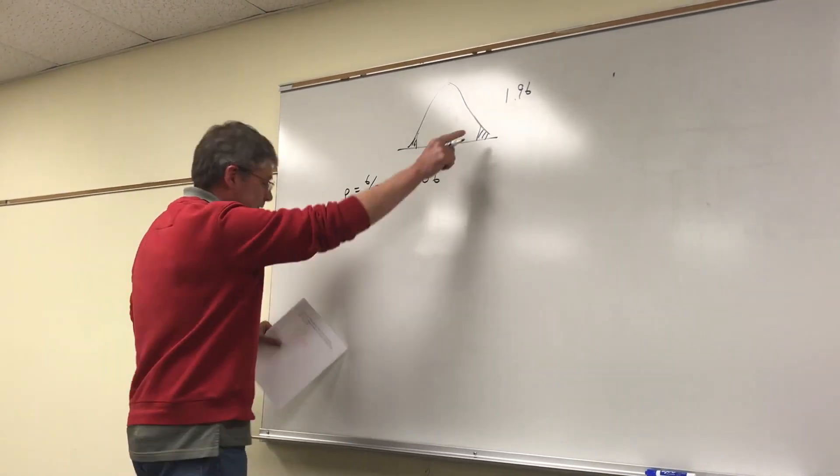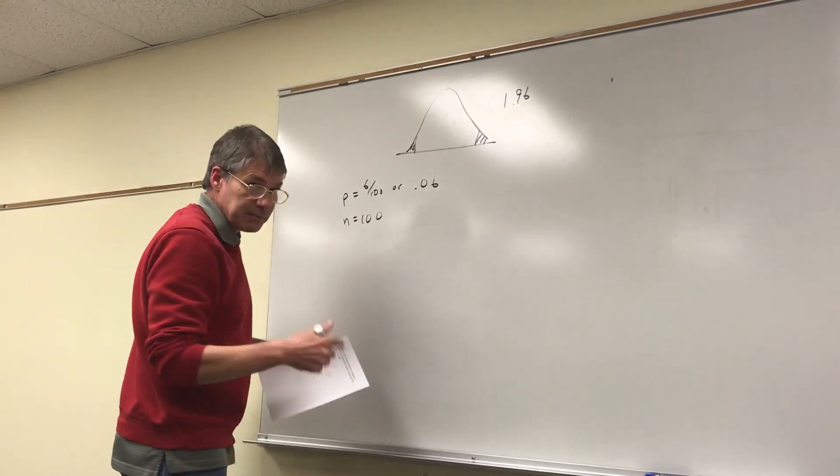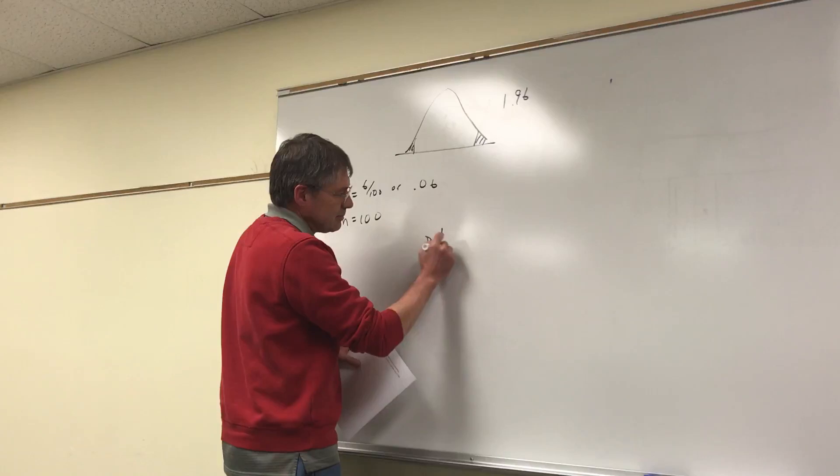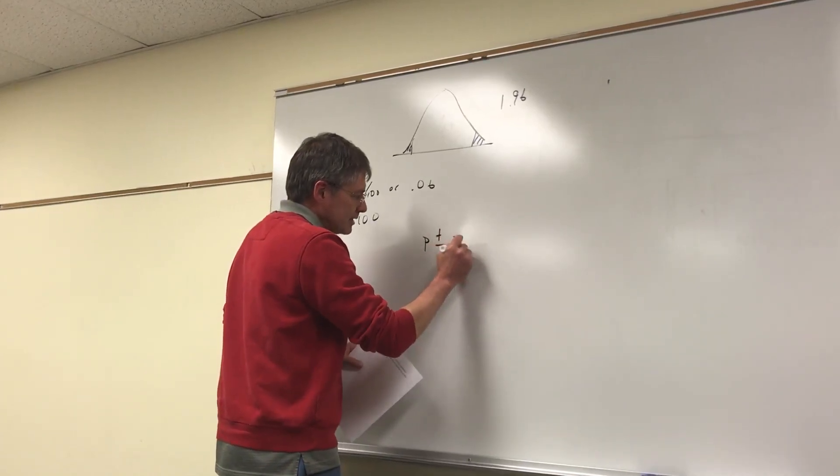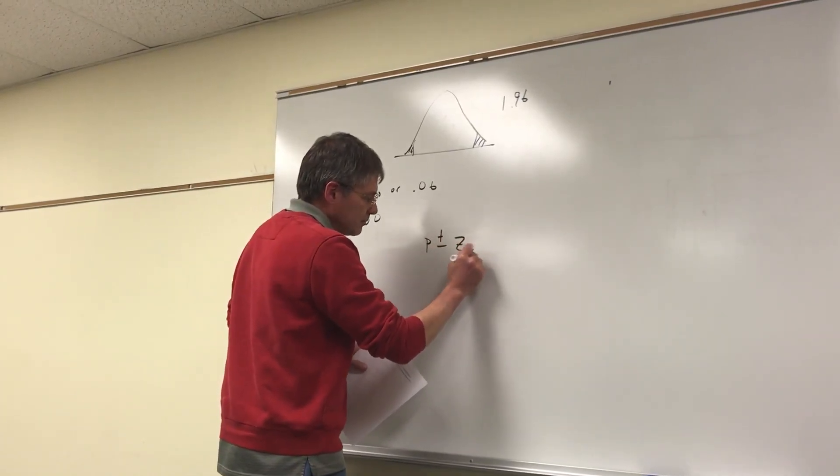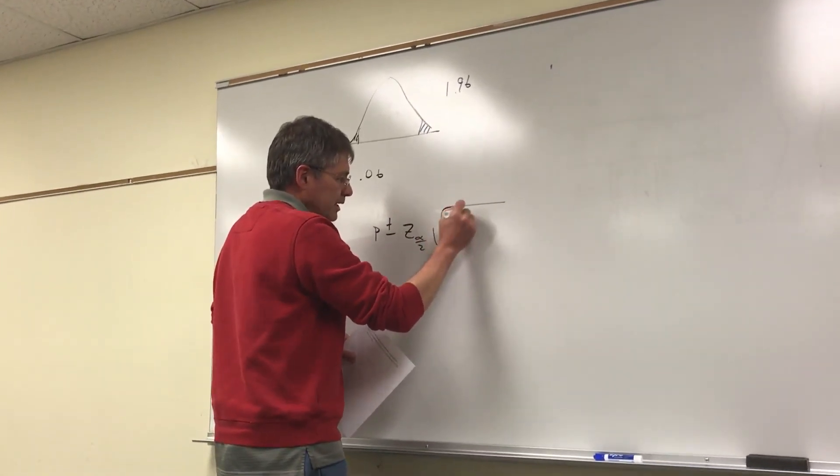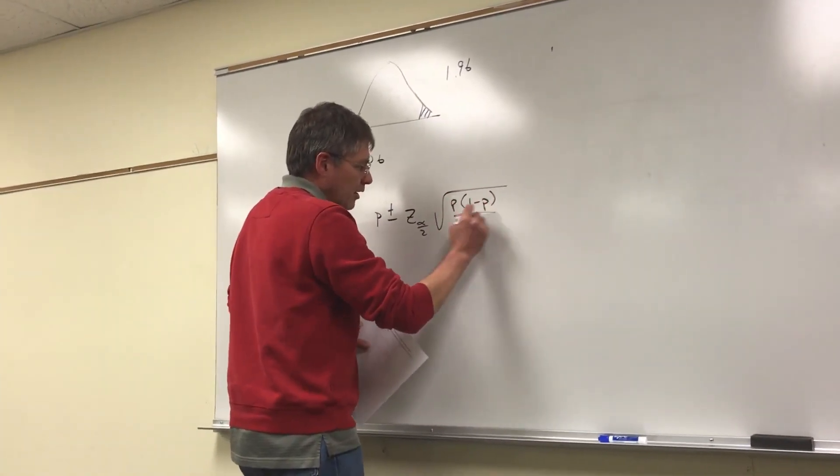The formula would be: my proportion plus or minus my z-score (alpha over 2), times the square root of p(1 minus p) all over n.